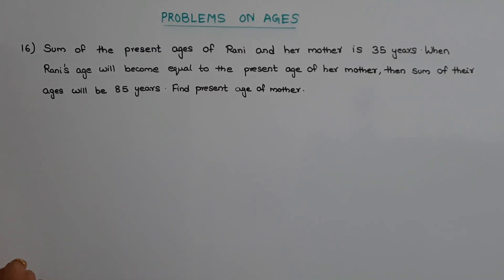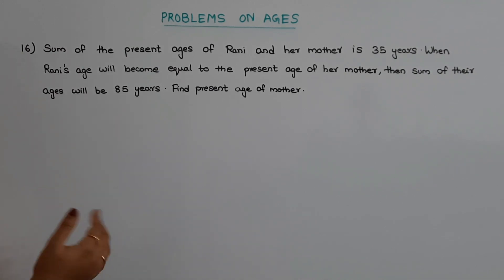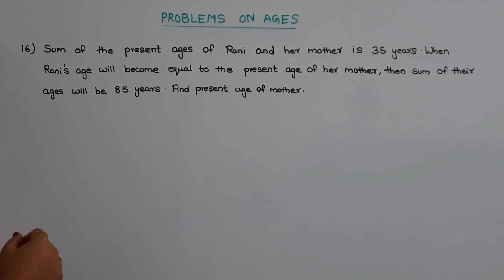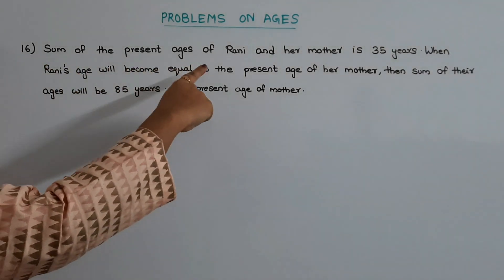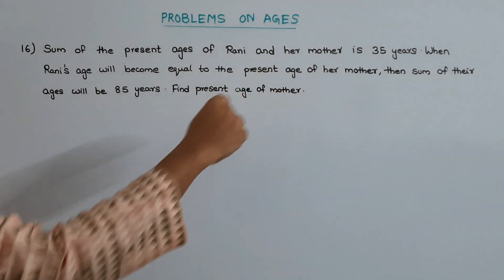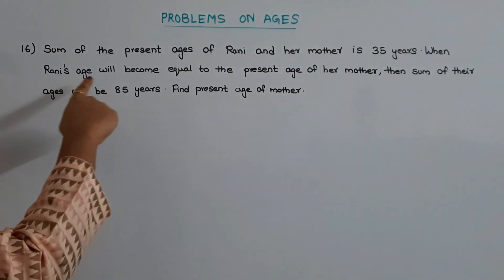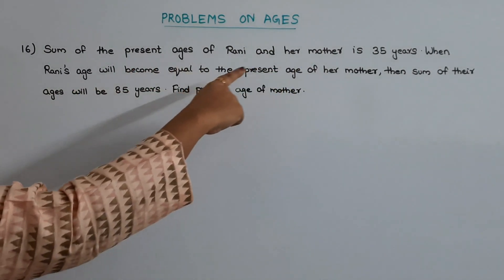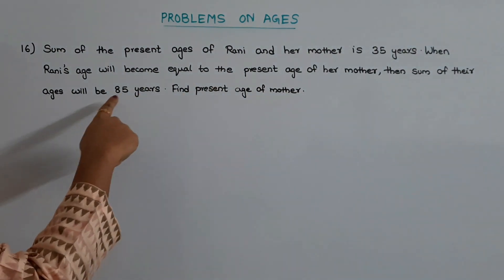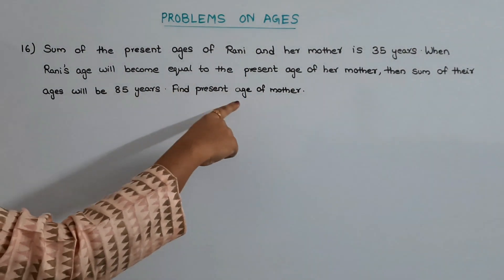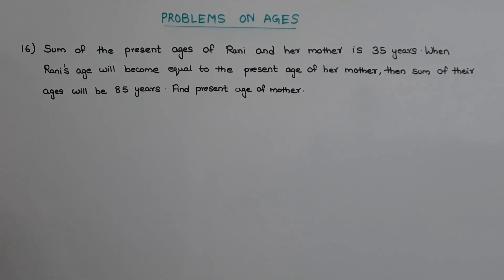Hi friends, welcome to the next episode of App Guide. In this episode we will be solving some other types of problems on ages. Let us go straight away to the next question. Question 16: the sum of the present ages of Rani and her mother is 35 years. When Rani's age will become equal to the present age of her mother, the sum of their ages will be 85 years. Find the present age of mother.